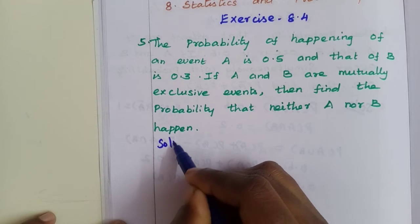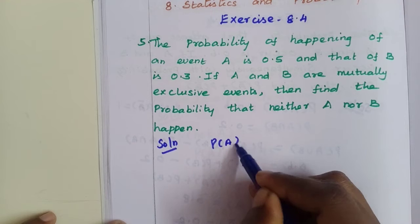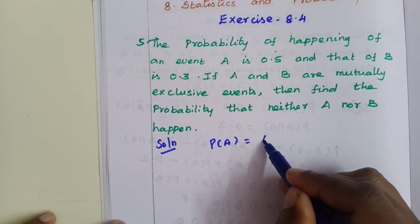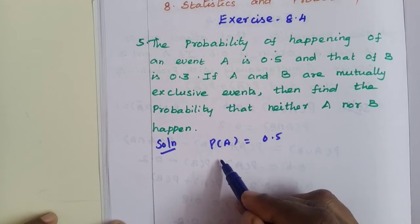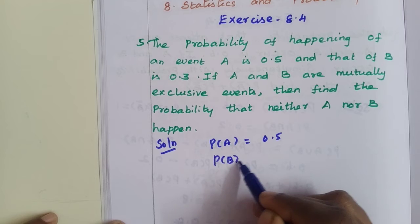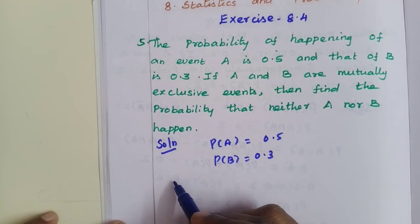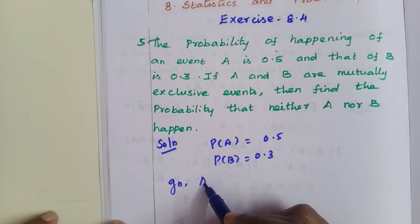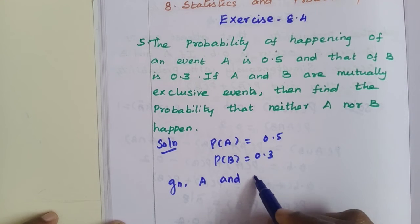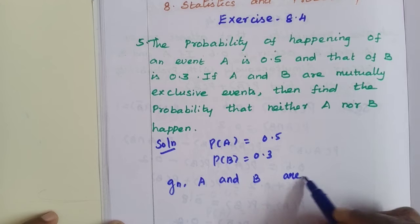So, P of A equals 0.5, P of B equals 0.3. Given A and B are mutually exclusive.